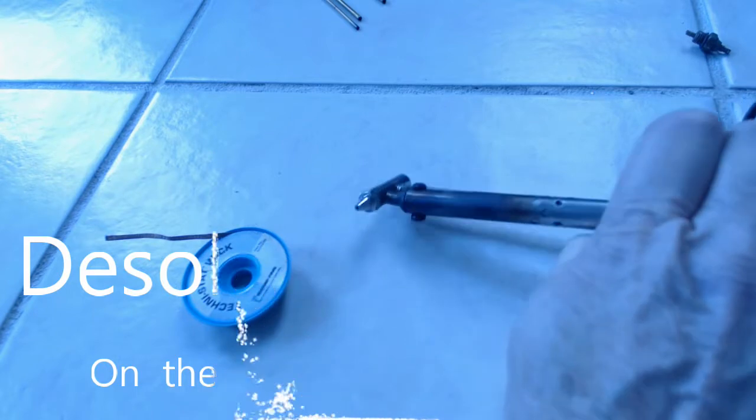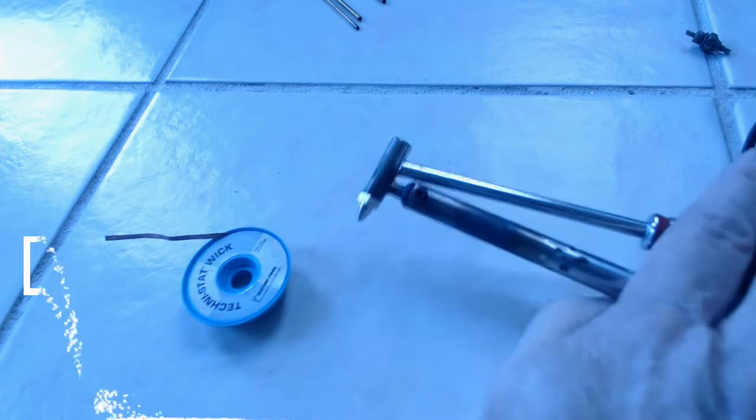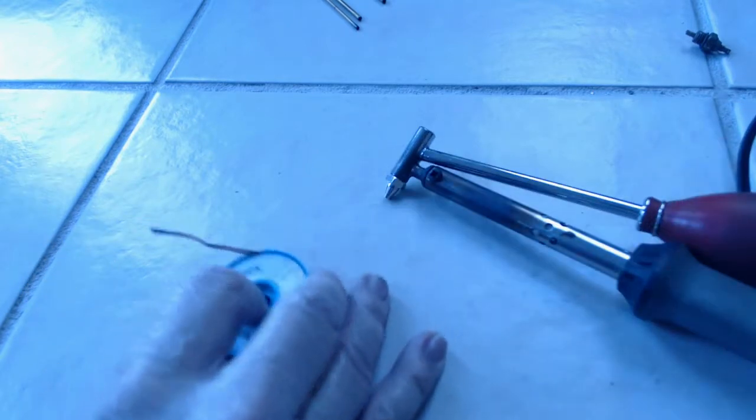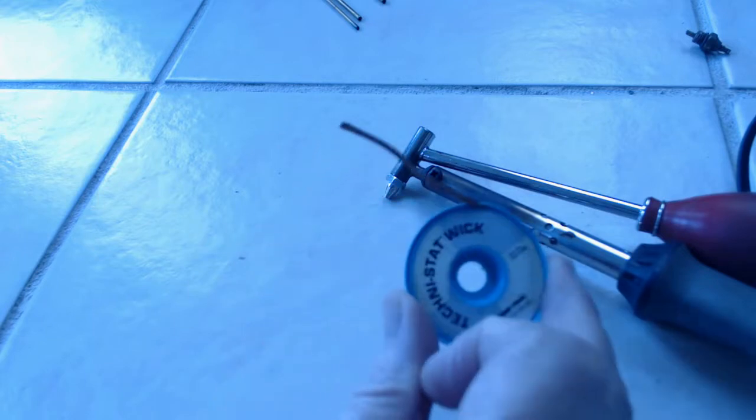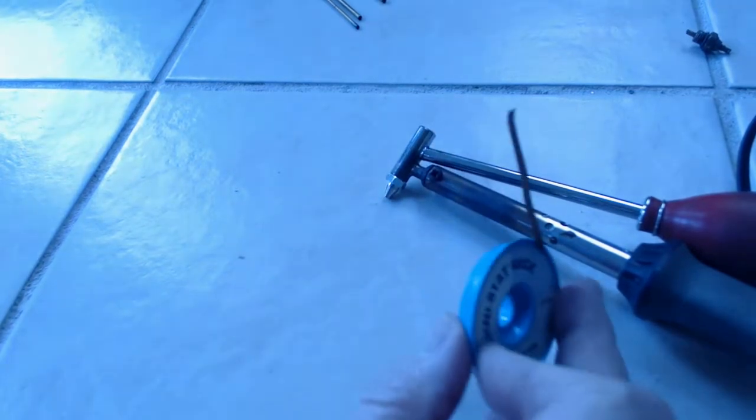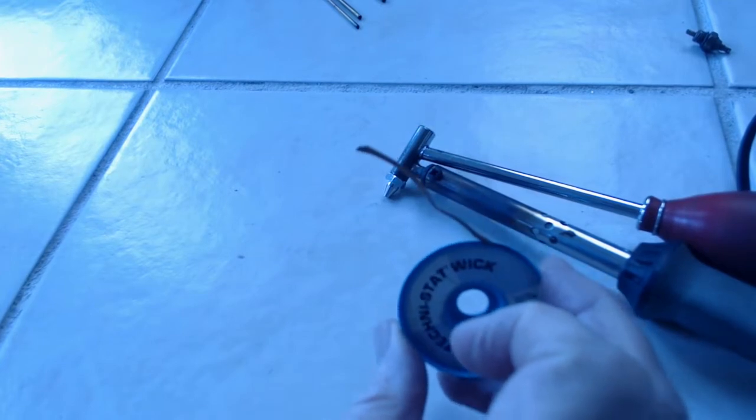This stuff can get kind of expensive if you do a lot of desoldering, and it does have its limitations. The next, of course, is some type of solder removal tool, a solder sucker if you will. The disadvantage with the desoldering wick is it's kind of expensive, and you use it up as you desolder things.